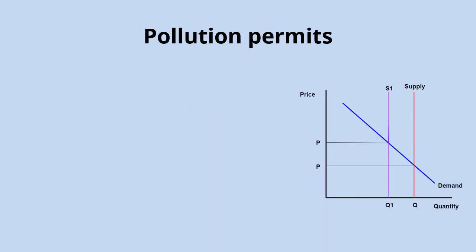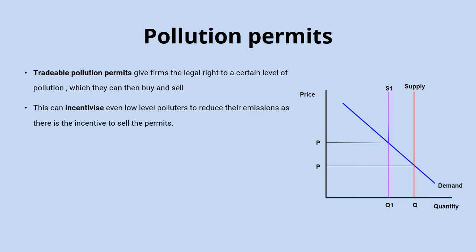This is really the thinking behind tradable pollution permits, which give firms the legal right to a certain level of pollution which they can then buy and sell. What you're effectively doing here is allocating property rights to clean air, and not only does that make a maximum limit for pollution, but it can also incentivize low-level polluters to reduce their emissions further, as they have that incentive to sell the permits and gain the benefit of doing this.